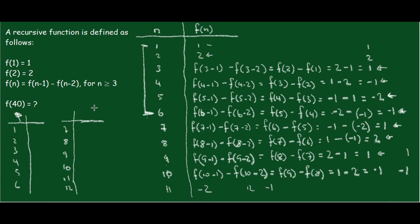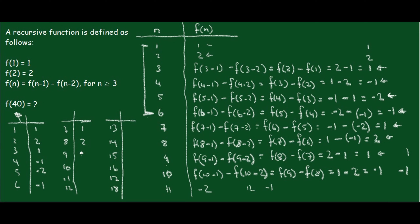Continuing the table: 13, 14, 15, 16, 17, 18. The values repeat: 1, 2, 1, negative 1, negative 2, negative 1, then 1, 2, 1, negative 1, negative 2, negative 1. That looks like the pattern — a cycle of 6 terms: 1, 2, 1, negative 1, negative 2, negative 1.